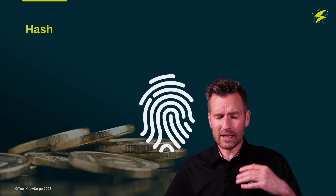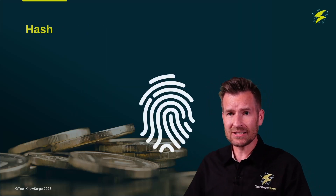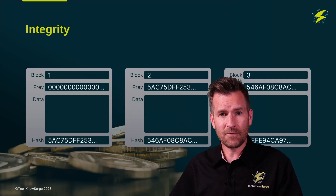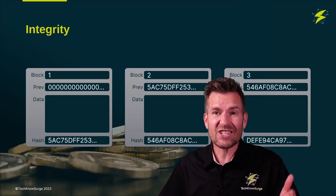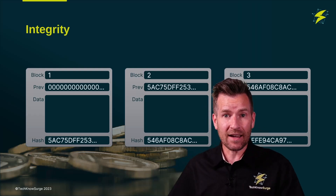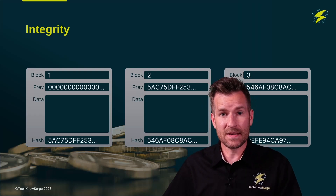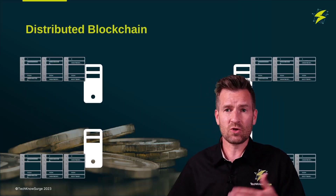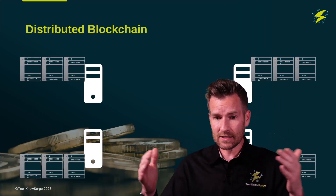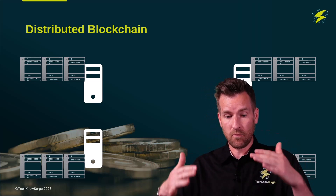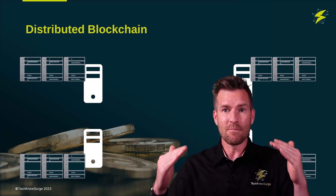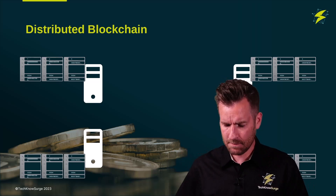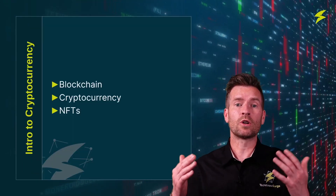A lot of blockchain really relies heavily on hashing algorithms to create unique fingerprints of the data. From there, we can create a chain of blocks to maintain integrity with the information. This also allows us to have distributed blockchain, which allows us to have a non-centralized or decentralized source of information, making sure that things still remain accurate. And this can be used in many different applications, to include cryptocurrency.